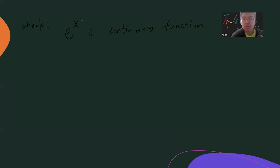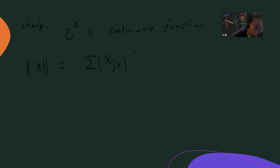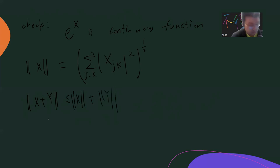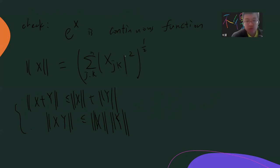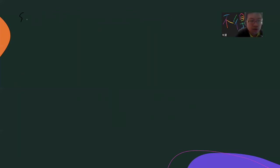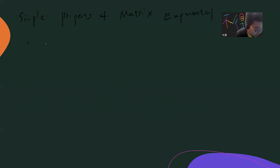Let me write down the norm. The norm ‖X‖ is defined as the square root of the sum of |x_{jk}|² over all j, k from 1 to n. One can also check the submultiplicativity: ‖XY‖ ≤ ‖X‖·‖Y‖. This is the standard matrix norm. Now let's go to the simple properties of the matrix exponential.